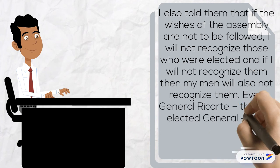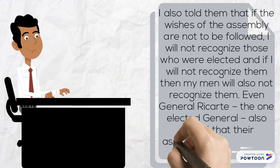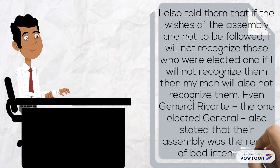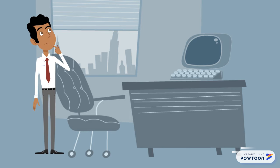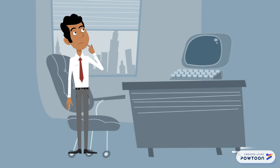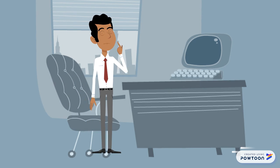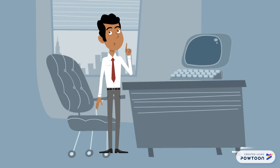Even General Ricarte, the one elected general, also stated that their assembly was the result of bad intention. The narrations that took place wouldn't have happened if it weren't for the hidden agenda the other members of the assembly have during the meeting.